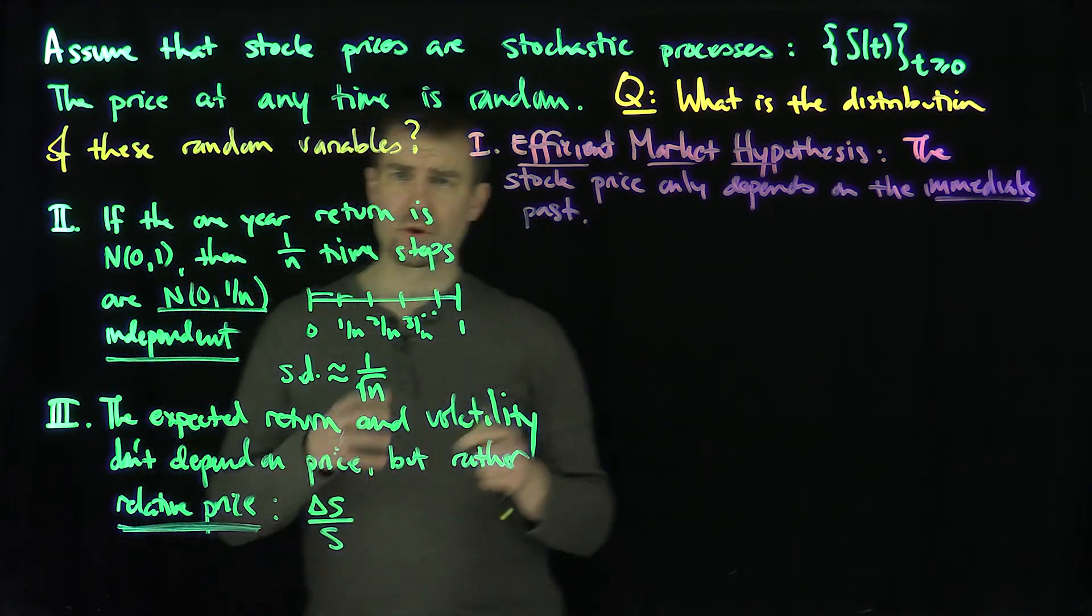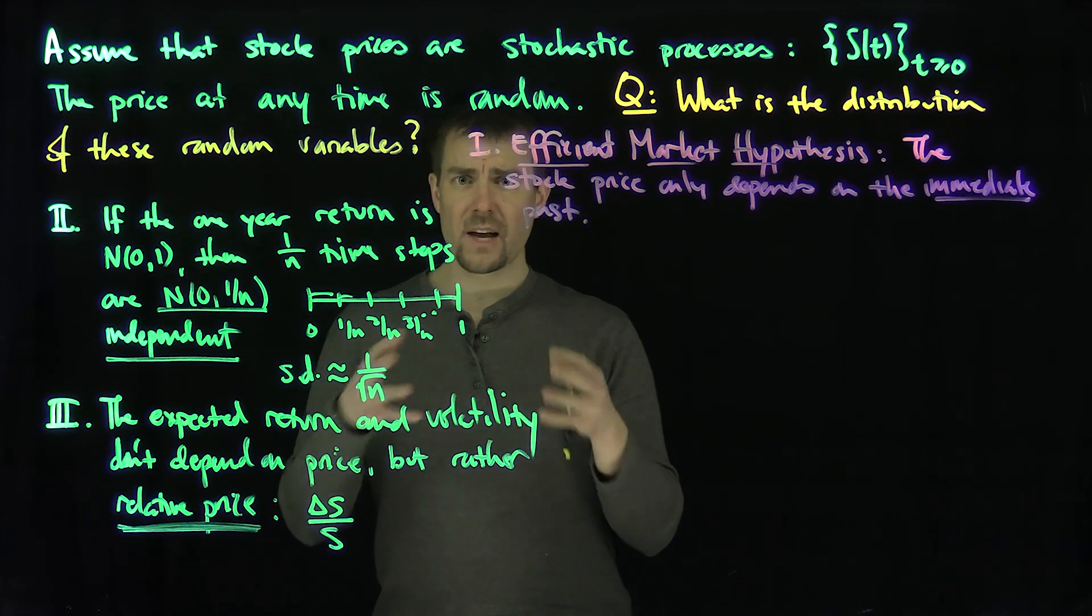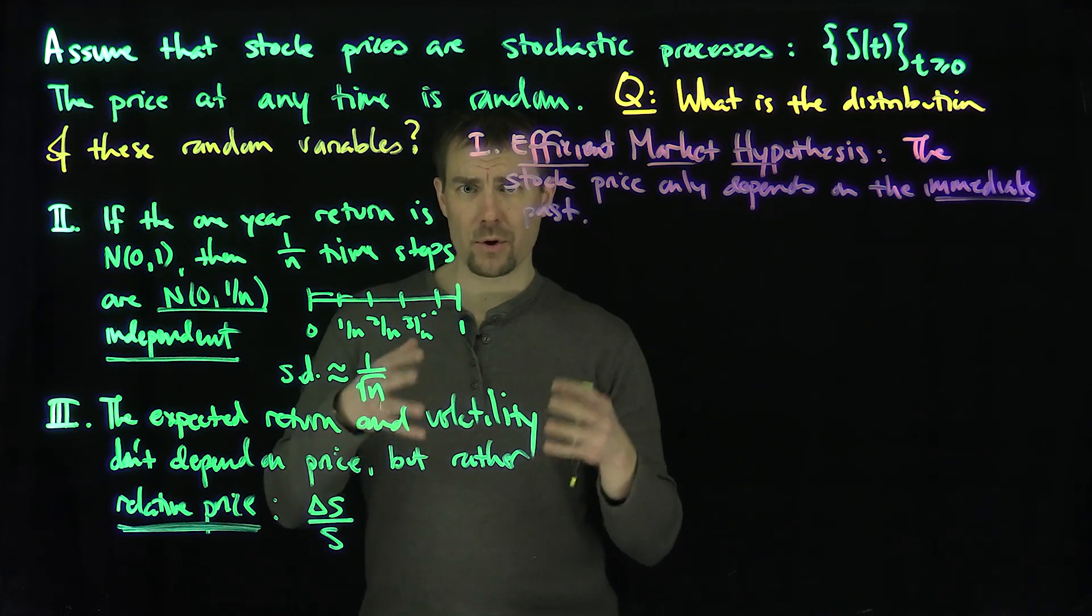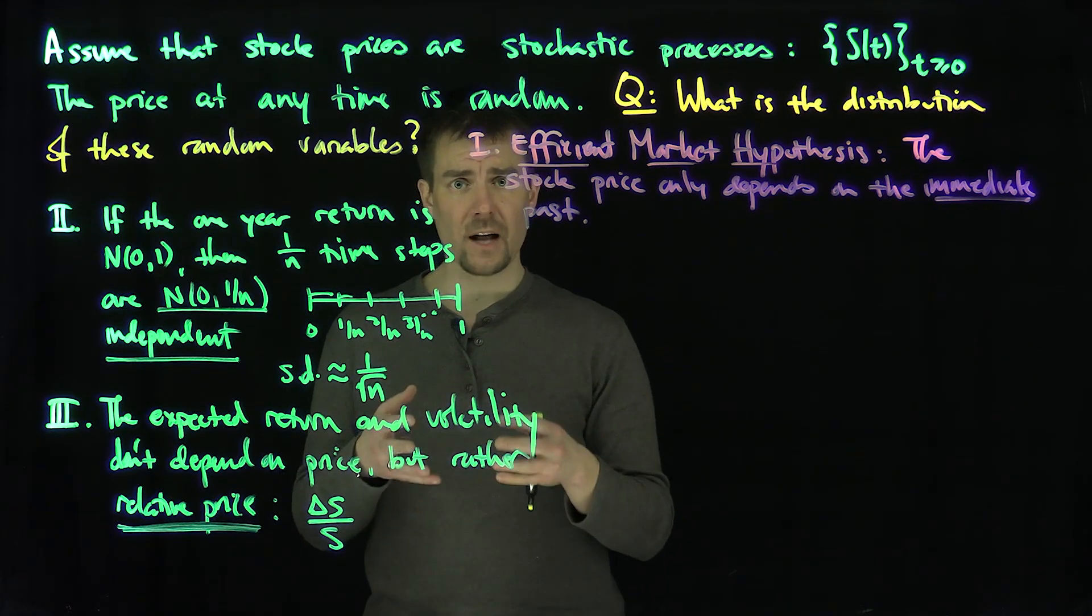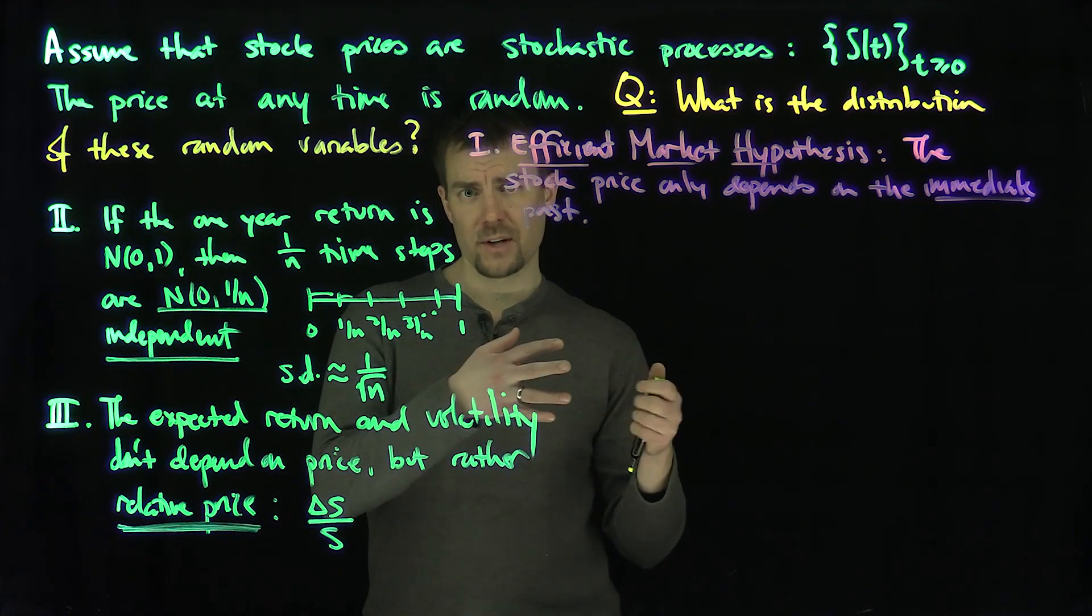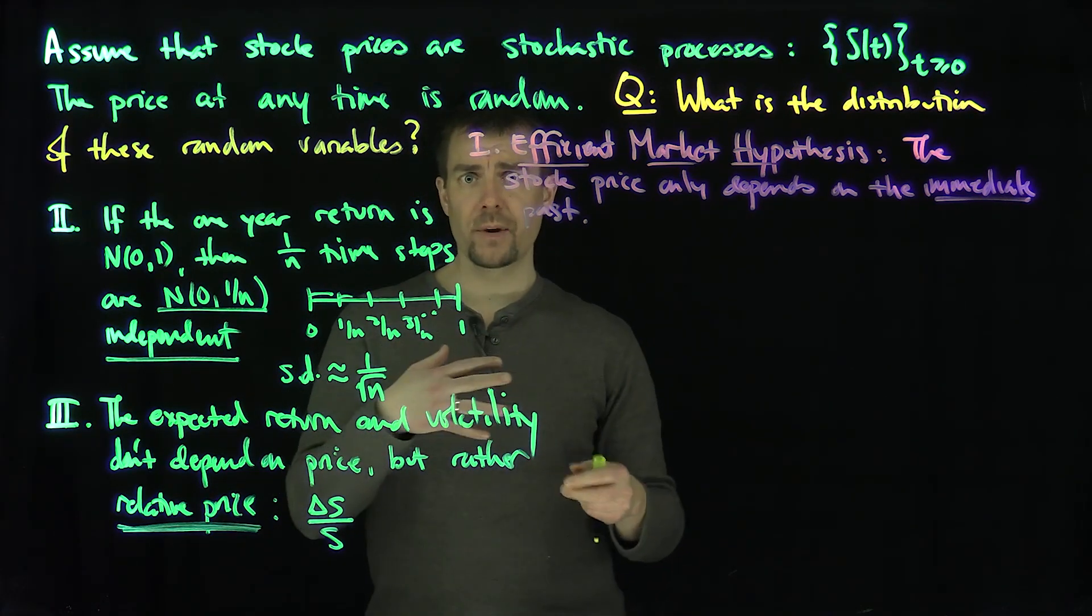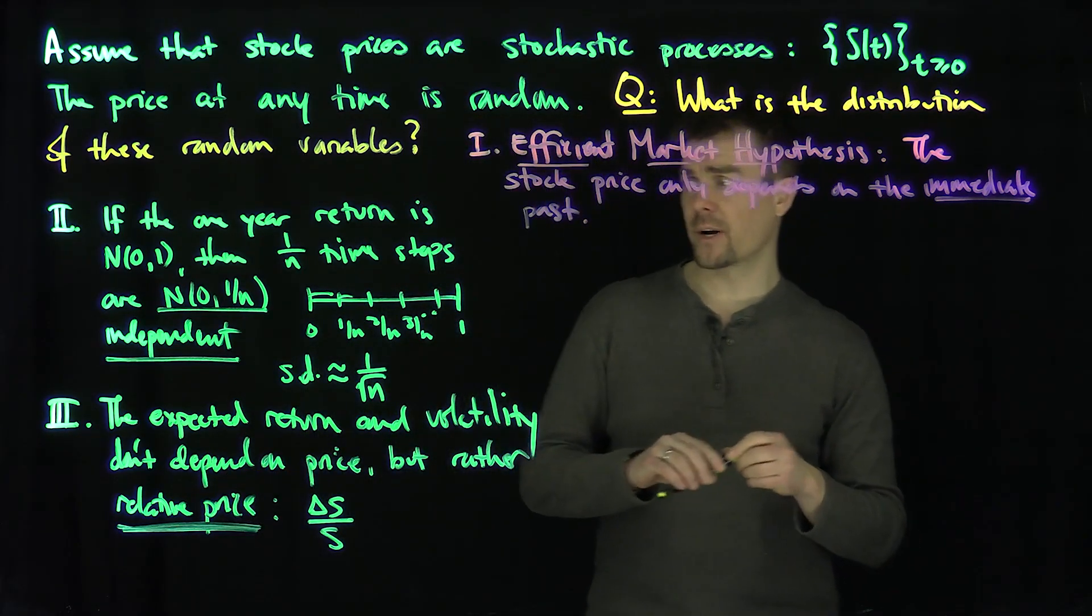That should make sense. If you have a hundred shares and expect a 10% return, it shouldn't matter if you have 10,000 shares—that person should still reasonably expect the same return. Same with the volatility. It's a relative thing, a relative ratio. It's the change in stock price over the stock price.